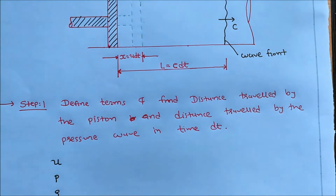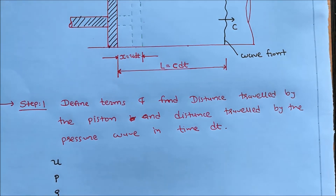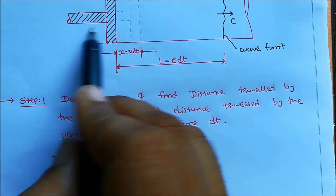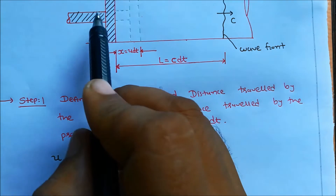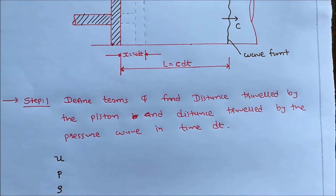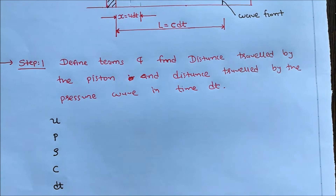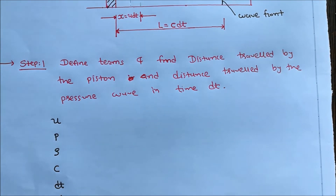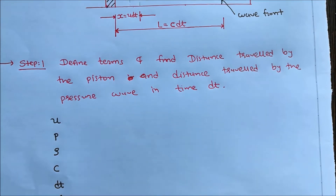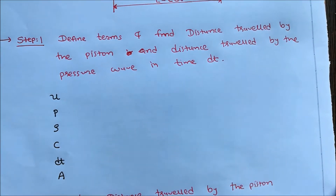In step number 1, define terms and find the distance travelled by the piston and distance travelled by the pressure wave in time dt. Here: u is the velocity of the piston; P is the pressure of the fluid in the pipe before movement of the piston; rho is the density of the fluid before movement of the piston; C is the velocity of the sound wave or pressure wave travelling in the fluid; dt is the small interval of time; and A is the cross-sectional area of the pipe.